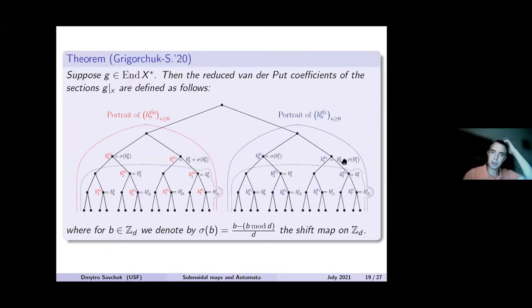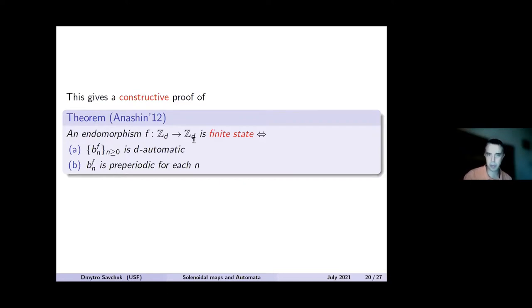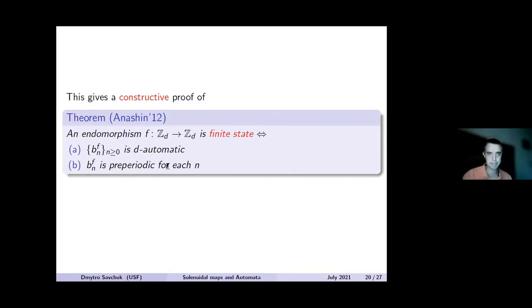This theorem allows us to give a constructive, and arguably easier, proof of a theorem proved by Anashin in 2012, which relates endomorphisms — usually defined by Mealy automata — and automatic sequences — defined by Moore automata. An endomorphism f is finite state if and only if the sequence of its reduced Van der Put coefficients is d-automatic, and moreover those Van der Put coefficients must be eventually periodic for each m. Our approach gives a constructive proof of that result.